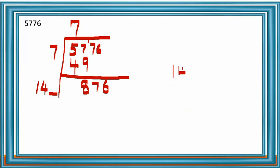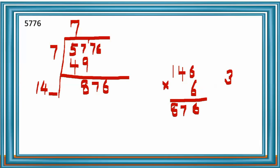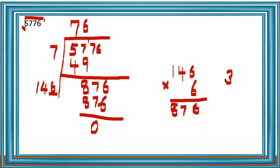Write 14 here. We need a digit for the right side of 14. Try 6: 146 × 6 = 876. Check: 6 × 6 = 36, write 6; 4 × 6 = 24 plus 3 = 27, write 7; 1 × 6 = 6 plus 2 = 8. So 146 × 6 = 876 — exact. Write 6 in the quotient place. 876 minus 876 = 0. The square root of 5,776 is 76.